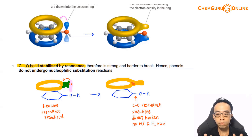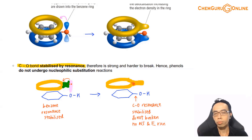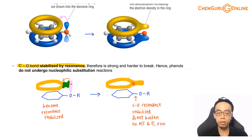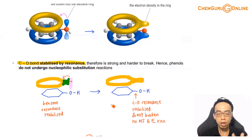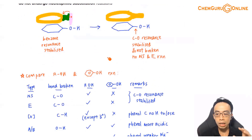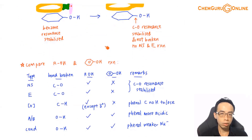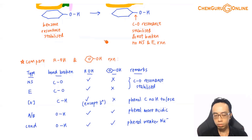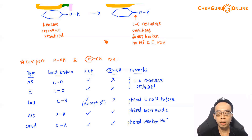If the CO bond is stabilized by resonance, it is very stable and we will not be able to break it. The consequence is that since we cannot break the carbon-oxygen bond, many reactions we expect for alcohols no longer apply to phenol. We want to appreciate that resonance stability really affects the reactivity of all the functional groups it is attached to.